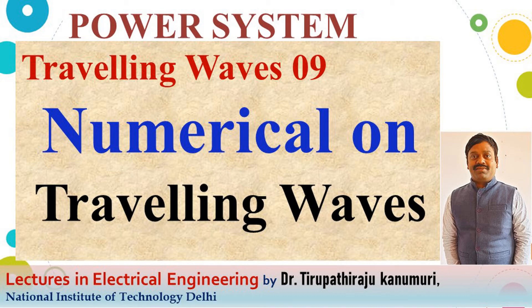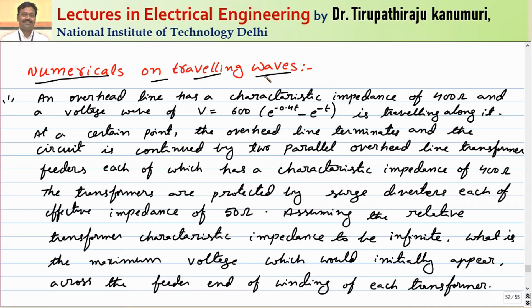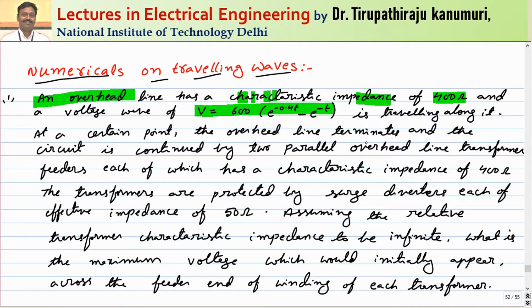Hi y'all, today we are going to see some numericals on traveling waves. It is given that an overhead transmission line has a characteristic impedance of 400 ohms and a voltage wave of V = 600 · e^(−0.4t) − e^(−t) is traveling along it.